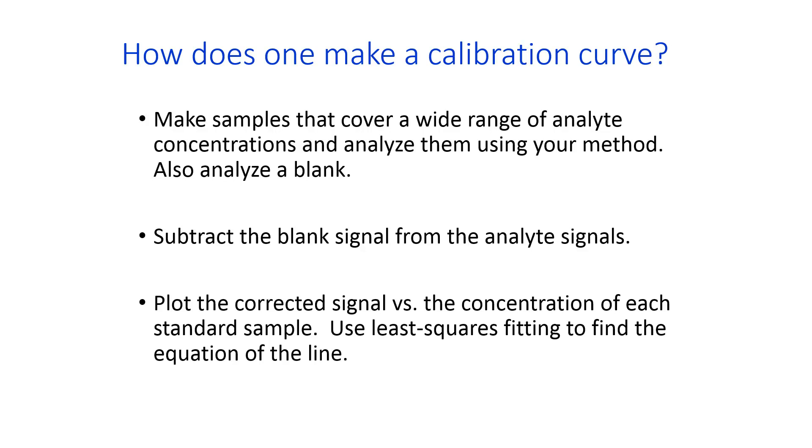The reason to do that is in case your instrument gives some signal when you put in a blank. Ideally, you put in a blank, you get no signal, but sometimes you get some. So you would want to subtract that blank signal from all the analyte signals, and then plot that corrected signal versus the concentration to get a set of data points that look like they should fit onto a line. Then use least squares fitting to find the equation of that line.